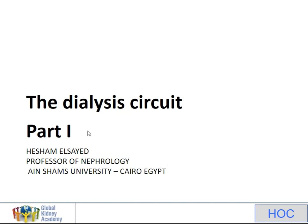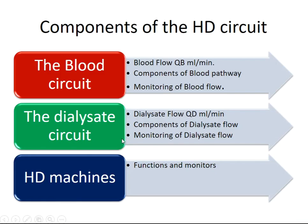The dialysis circuit, part one. We will discuss the components of the hemodialysis circuit: the blood circuit, the dialysis circuit, and the hemodialysis machines. In the blood circuit, the blood flow QP in milliliters per minute, the components of the blood pathway, and monitoring of blood flow pressure monitors. The dialysis circuit covers dialysis flow QD in milliliters per minute, components, and monitoring. Lastly, hemodialysis machines: important functions and monitors.